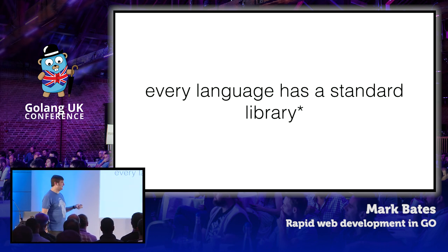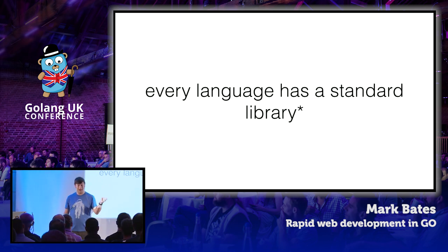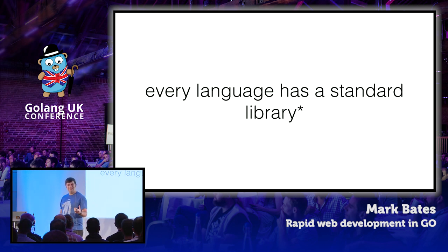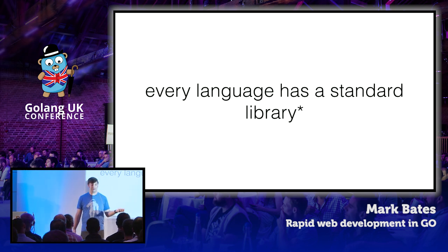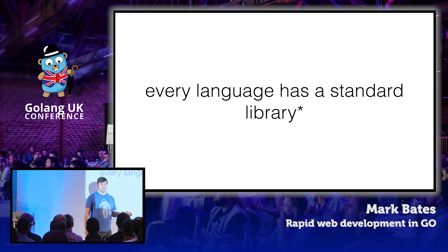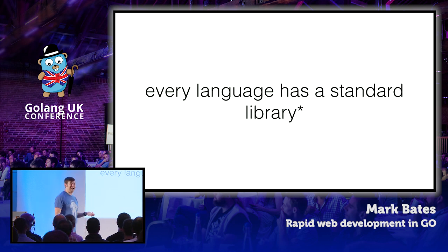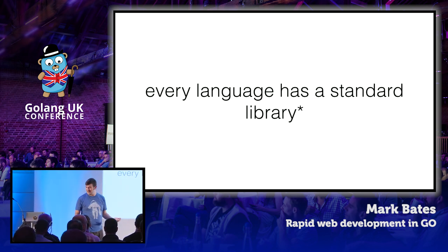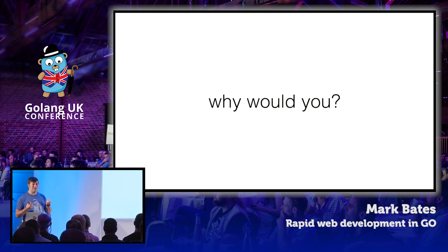Every language has a standard library. Some are better than others and Go is definitely one of the best. But why would you want to build a web app using just the standard library? Ruby has web app stuff in the standard library — has anybody here ever built a web app using just the Ruby standard library? Or just the Java standard library? The .NET standard library? We are like the only language that touts this way of building complex web applications.